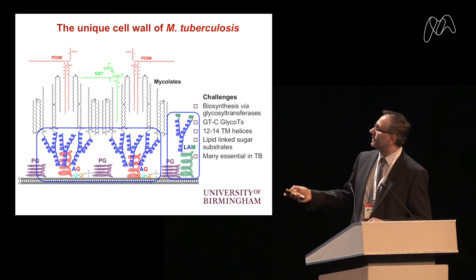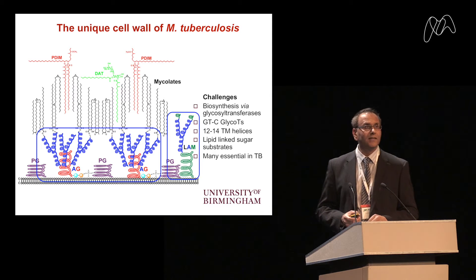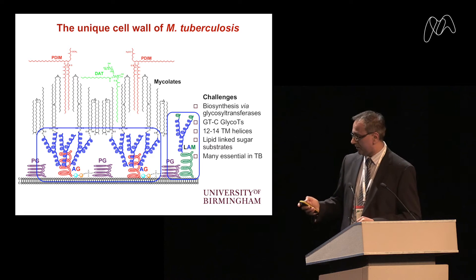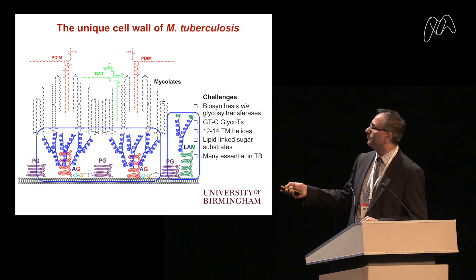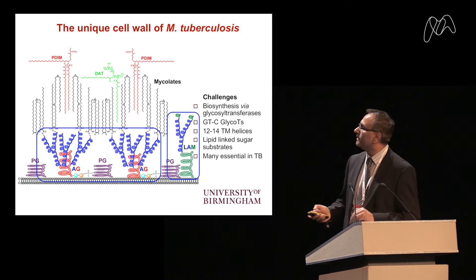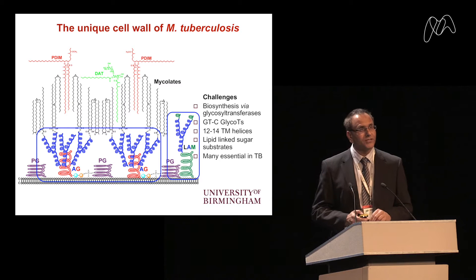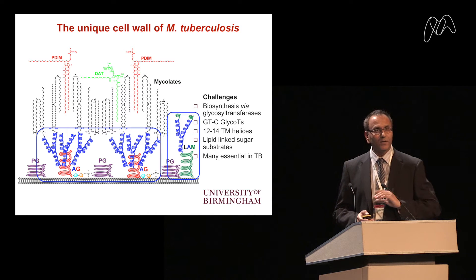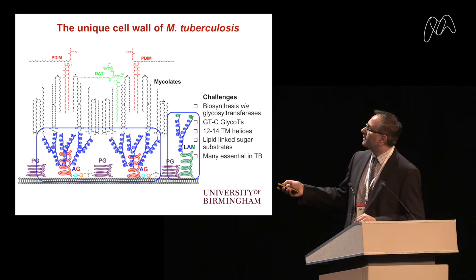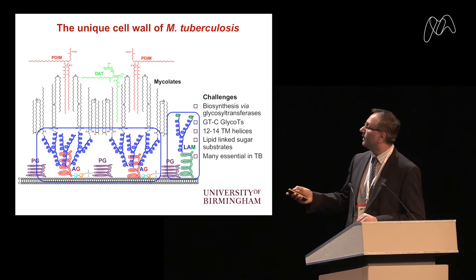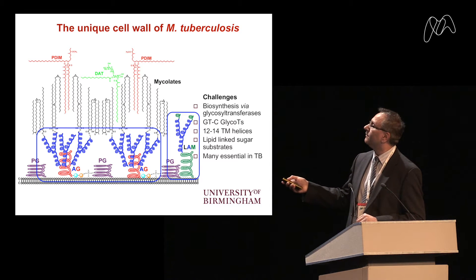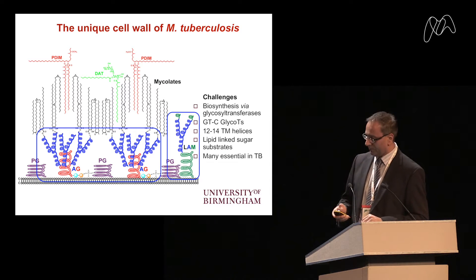Associated with the cell wall, and anchored in the plasma membrane through a phosphatidylinositol anchor, we have what we term lipoarabinomannan. It has a linear mannan backbone punctuated by alpha-1,2 branches — a 1,6 backbone with two branches. Attached to that is a very similar arabinan segment to what we find in arabinogalactan, and also a variety of caps associated with lipoarabinomannan.